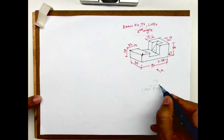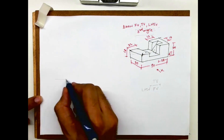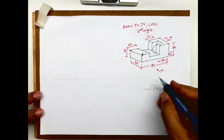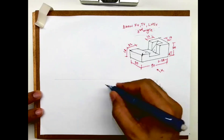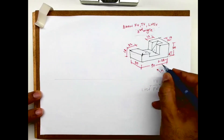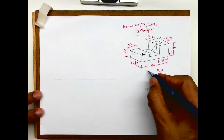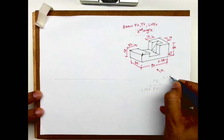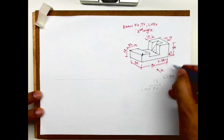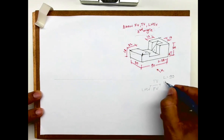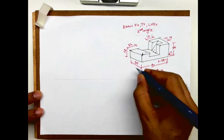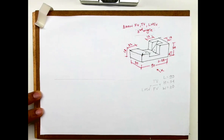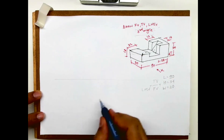So this is how it will come. First we will draw the layout. We need to draw front view, top view, and side view. We'll find out the length, width, and height. The length is 90, height is 34, and width is 30.